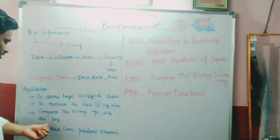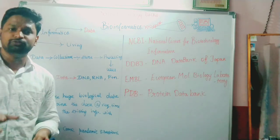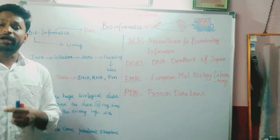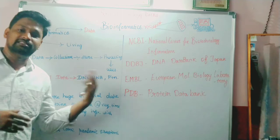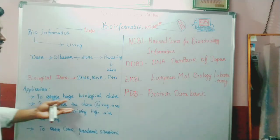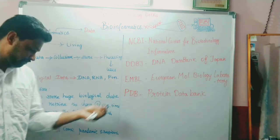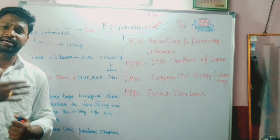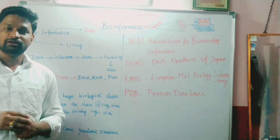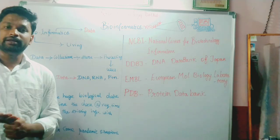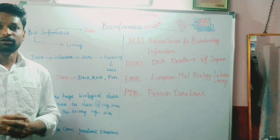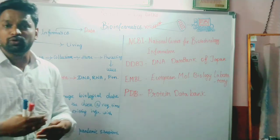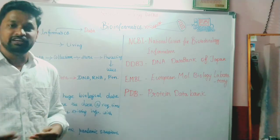Another application is to compare existing information with new sequences. For example, if you are isolating a new bacteria but you are unable to identify its name, you can compare the DNA sequence of the new isolate with existing ones stored in the repository. Also, bioinformatics is helpful in pandemic situations. During pandemics like COVID, we may be unable to identify which microorganism is responsible for the disease. If you isolate the genetic material and compare it with existing ones, you can immediately determine which bacteria or pathogenic organism is infecting humans.